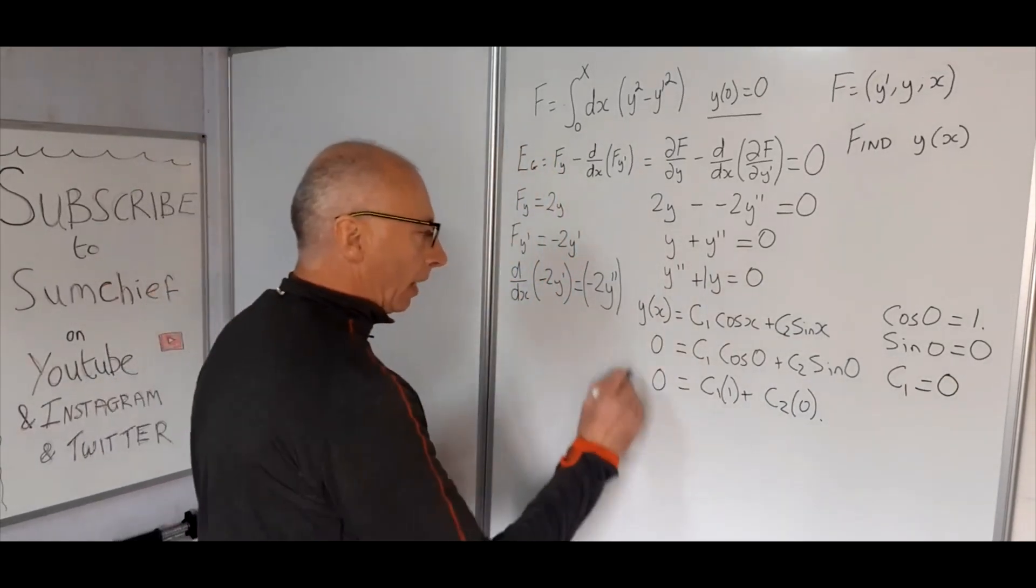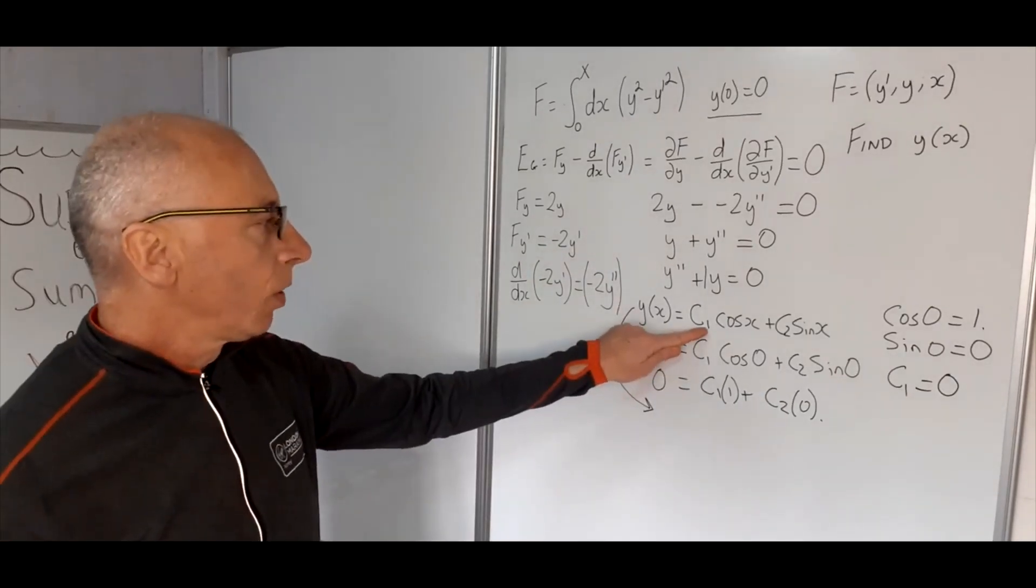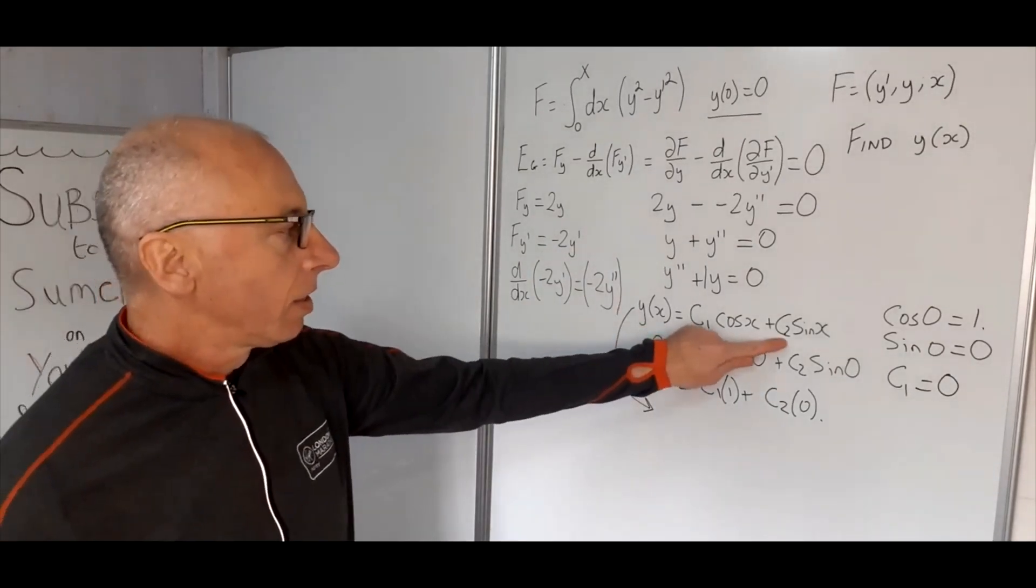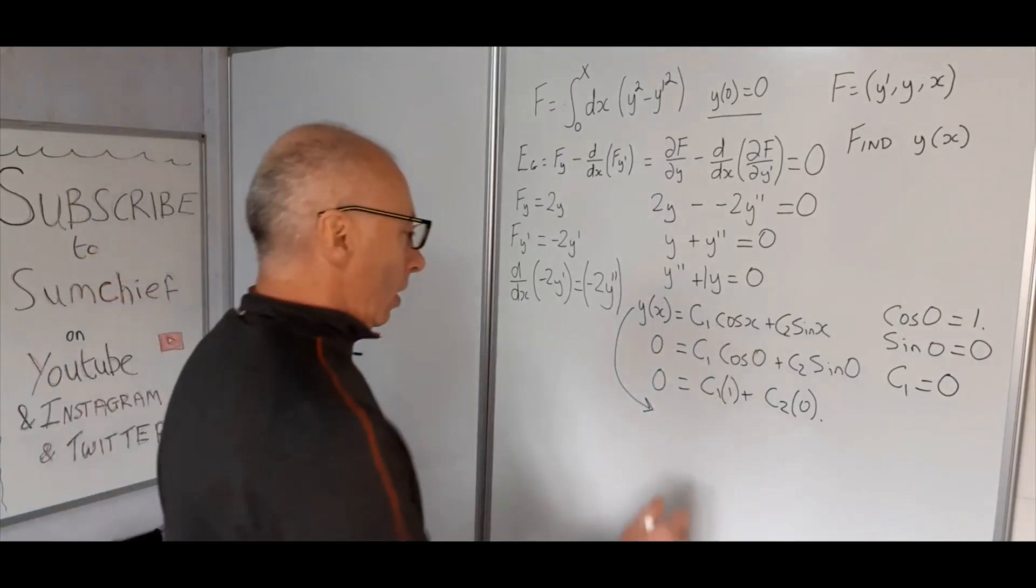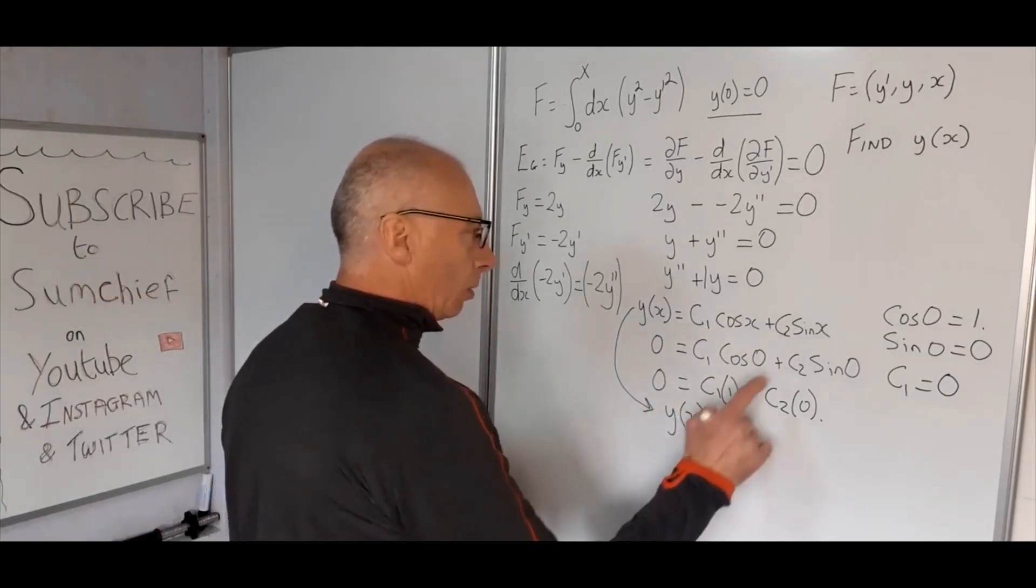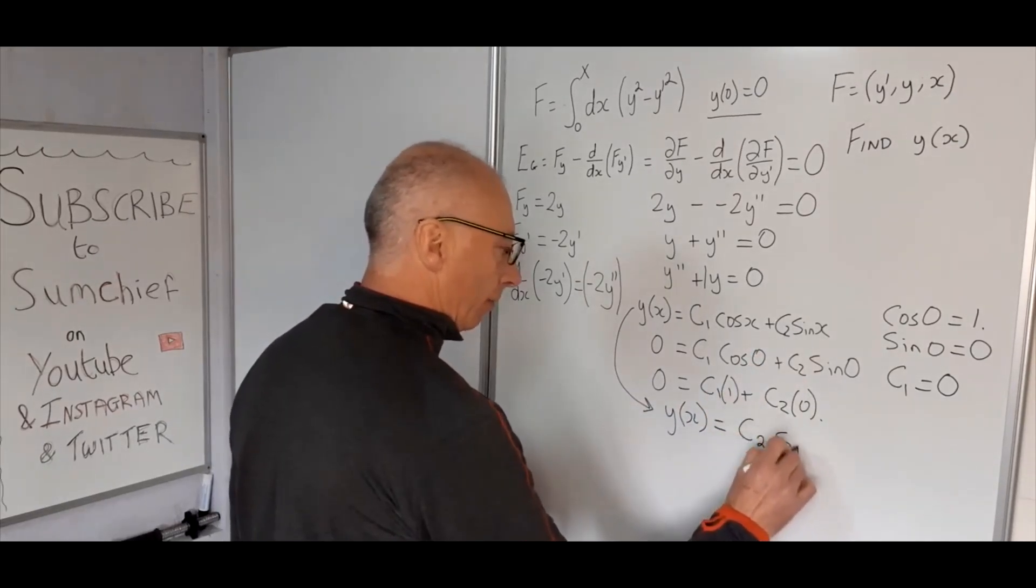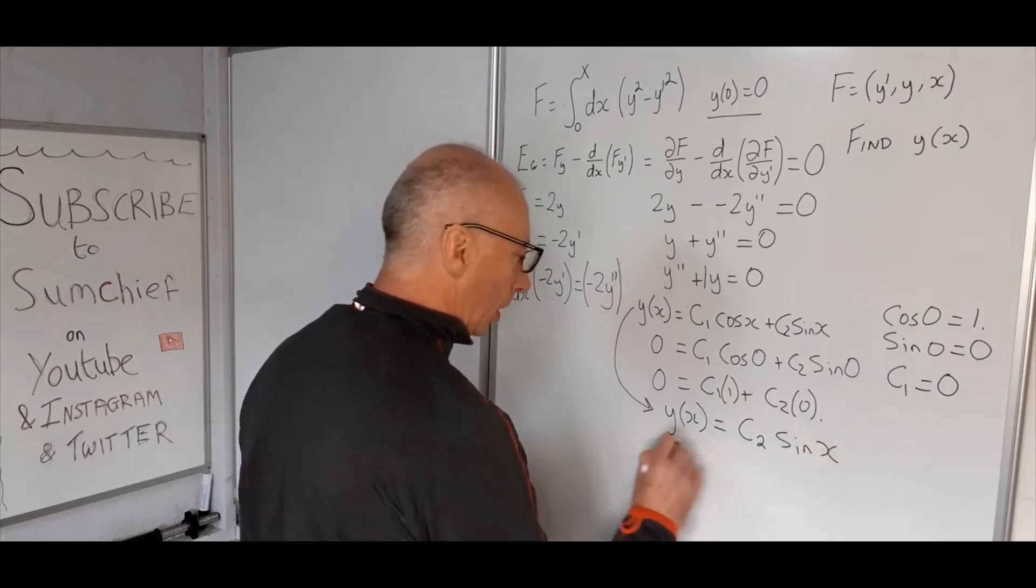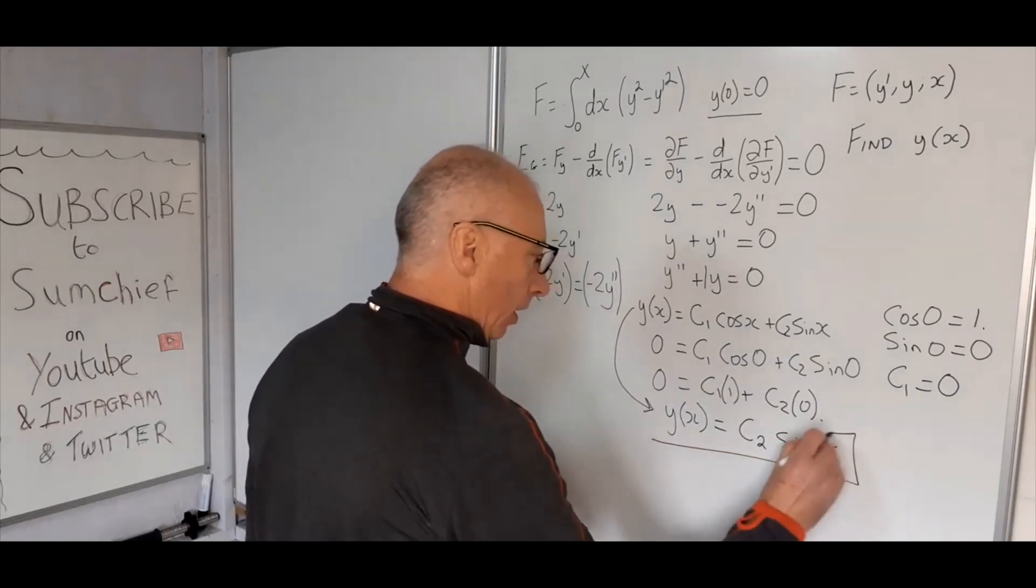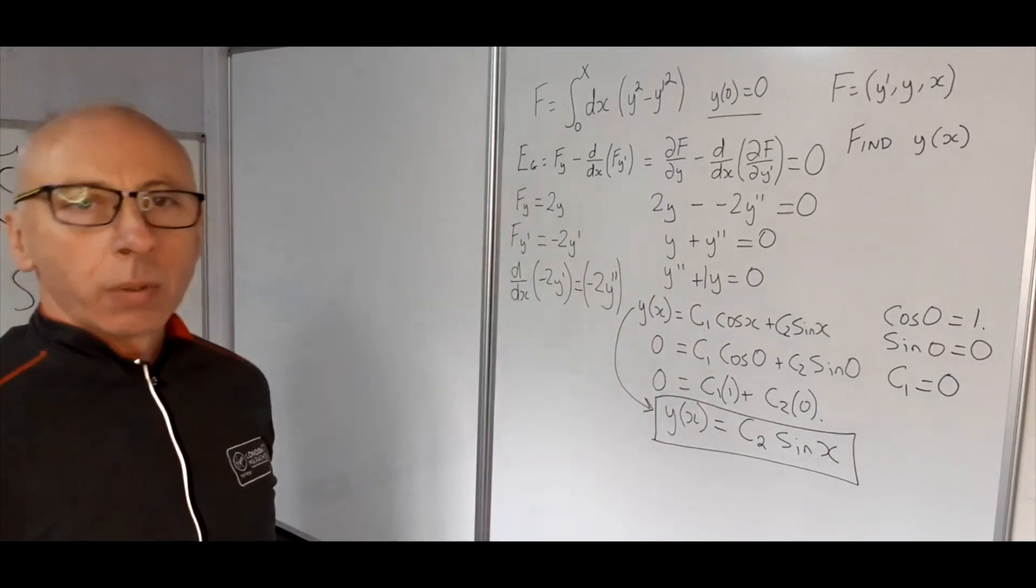So now going back to here, bring this back down now. If we know c1 is 0, then this c2 must be some constant. So therefore what we can say is that y of x equals c2 sine of x. And that is as far as we can go at this stage with this question.